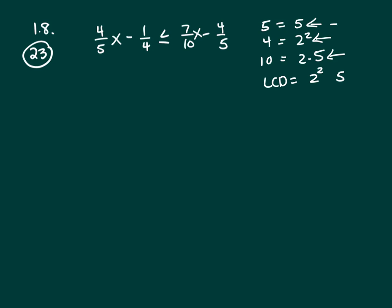Do the same thing for the 5s. How many 5s are here? 1. None. 1. So 4 times 5 is 20.